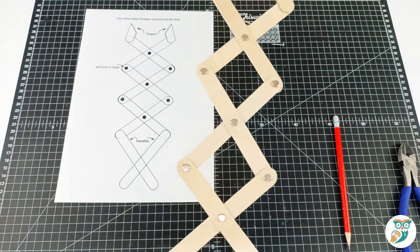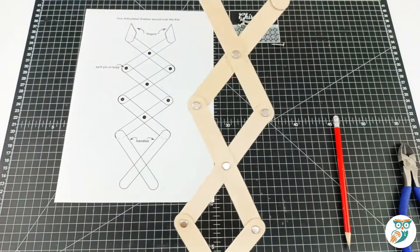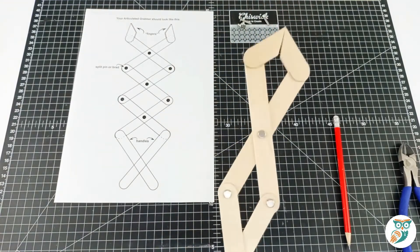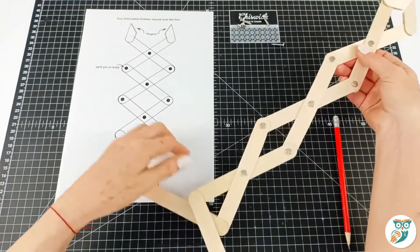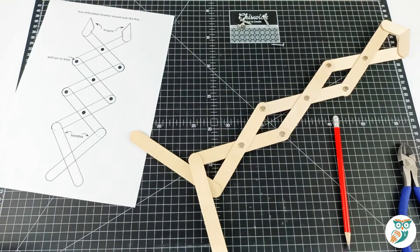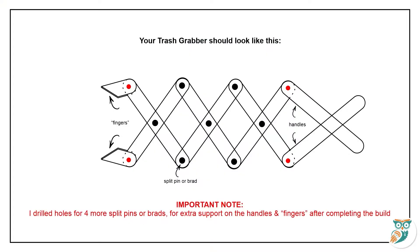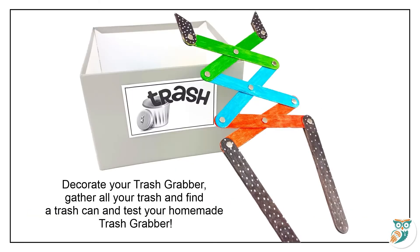So there we go. There's all of our hinge points all together and our trash grabber is working and ready to go and pick up some trash. Now we did go through and drilled some extra holes and added some more split pins just because we found it made a bit more structural integrity for our piece. You can decide whether you want to do that with yours or not.